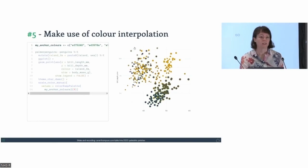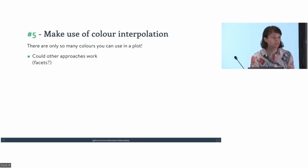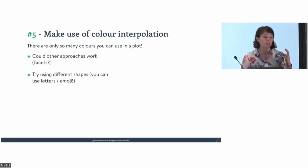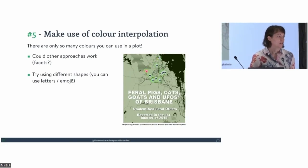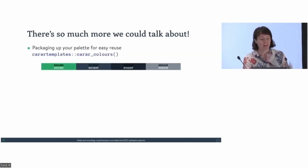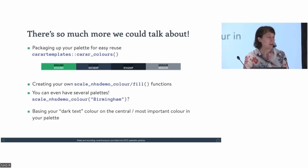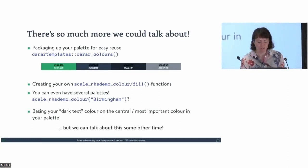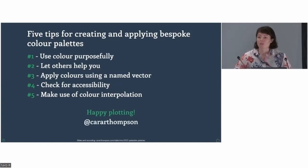Remember there are only so many colours you can use in a plot — try a different approach if you've got too many. You could facet your data, use different shapes, or use letters for data points as I did for exam analysis with too many syllabus sections. You can even use emoji as data points — here's the silliest plot I've ever created, done in R using gganimate. To summarise, my five tips are: use colour purposefully; let others help you; apply colour using a named vector; check for accessibility; and make use of colour interpolation. Happy plotting!